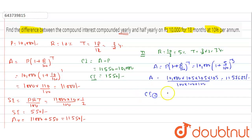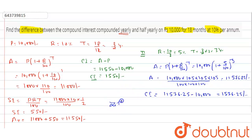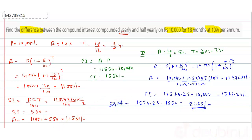The compound interest for half-yearly compounding is CI equals 11,576.25 minus 10,000, which equals 1,576.25 rupees for 18 months at 10 percent per year compounded half-yearly. So the difference in compound interest equals 1,576.25 minus 1,550 rupees, which equals 26.25 rupees — this is the difference between compound interest half-yearly and compound interest yearly.